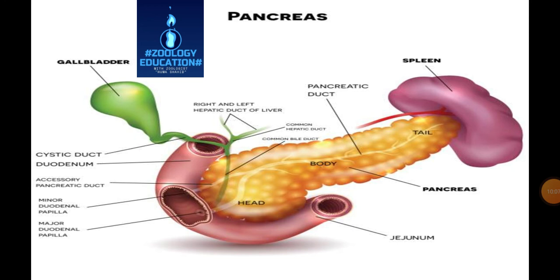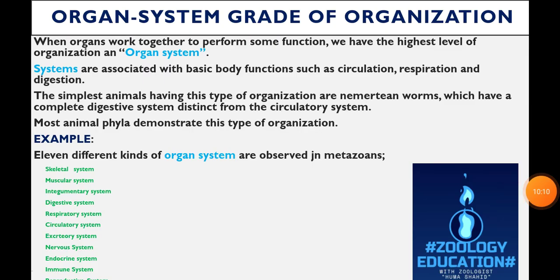Our last grade of organization is the organ-system grade. When organs work together to perform some function, we have the highest level of organization — the organ system. Systems are associated with basic body functions such as circulation, respiration, and digestion. The simplest animals having this type of organization are nemertean worms, which have a complete digestive system distinct from the circulatory system. Most animal phyla demonstrate this type of organization. Eleven different kinds of organ systems are observed in metazoans.